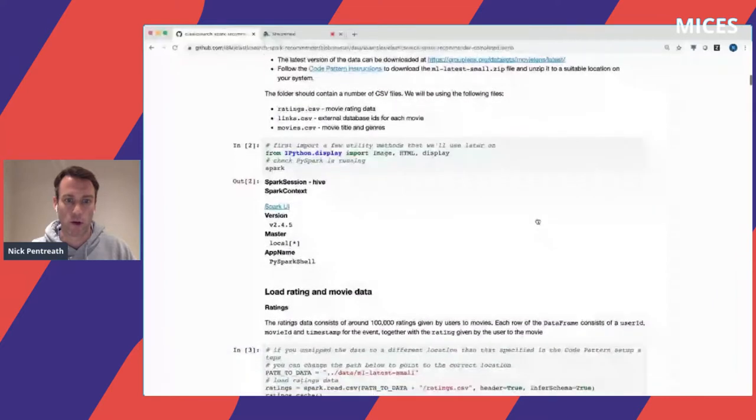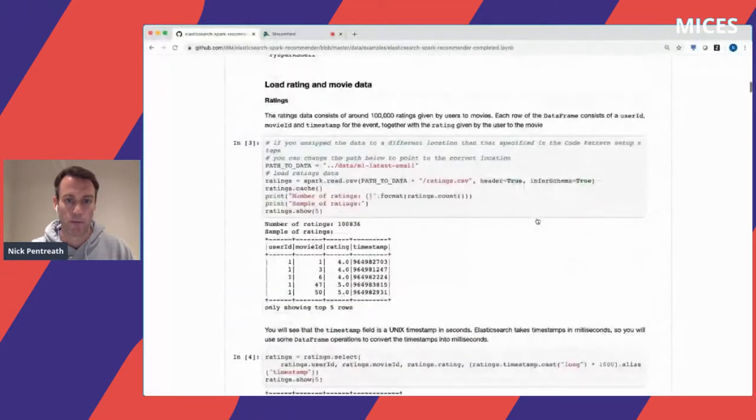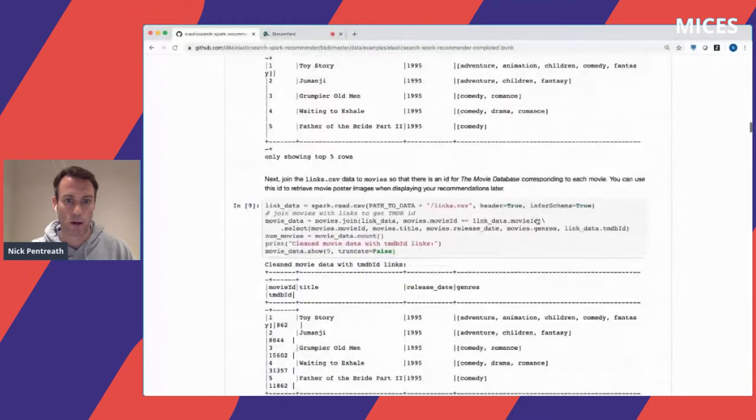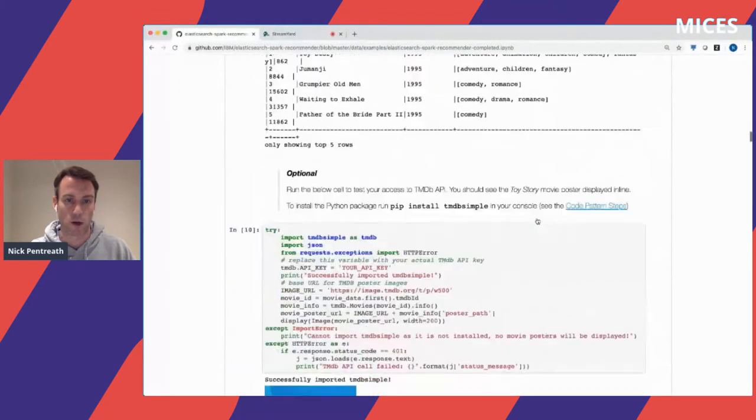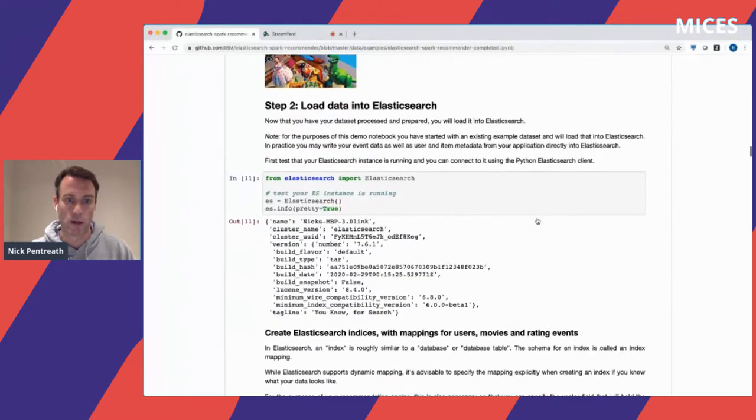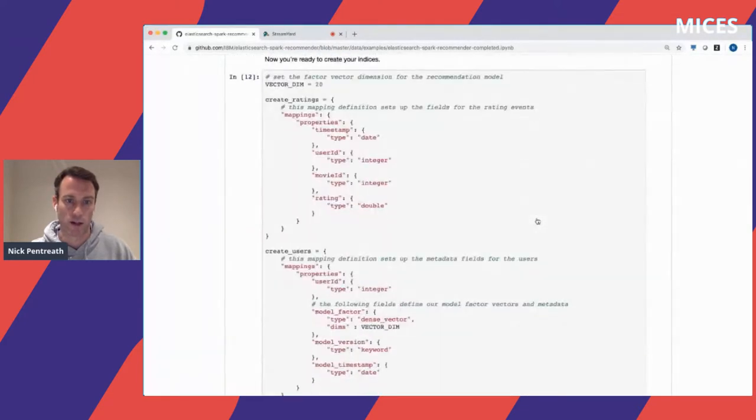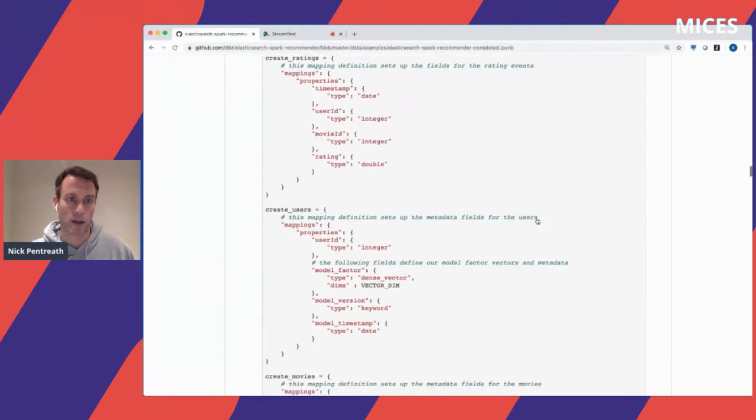I'm going to very quickly try and show an example of this. This is an Elasticsearch Spark recommender that I've created as part of my work at IBM. This very long notebook—I won't go through all of it—works through how to load data into Spark from Elasticsearch, run recommendations over movies using this exact functionality we talked about.